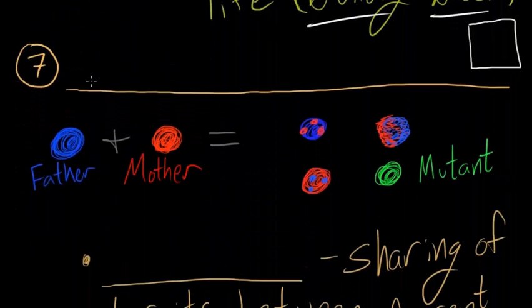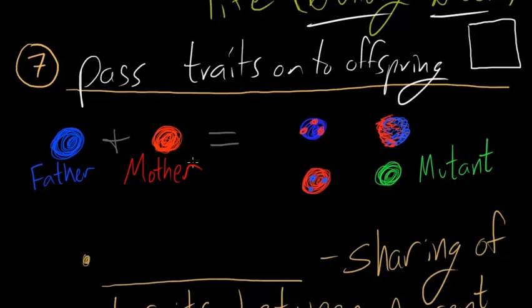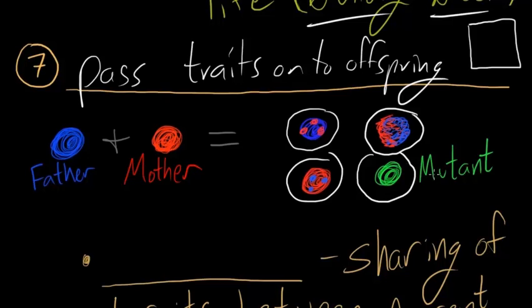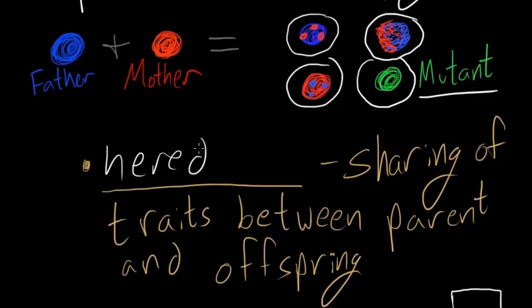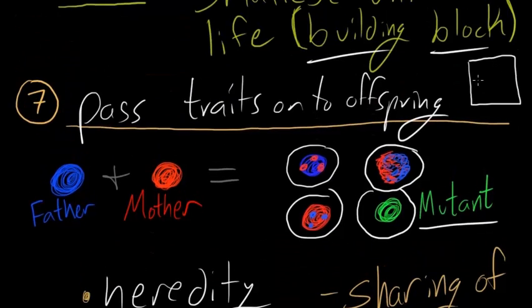You can see that all living things pass traits onto offspring. If a father and mother organism reproduce they make offspring that might look a lot like dad or a lot like mom or a blend between the two. They also might make one that doesn't look quite like either of them. They might make a mutant. Heredity is the sharing of traits between parent and offspring and all living things do this. They all pass their traits onto their offspring.